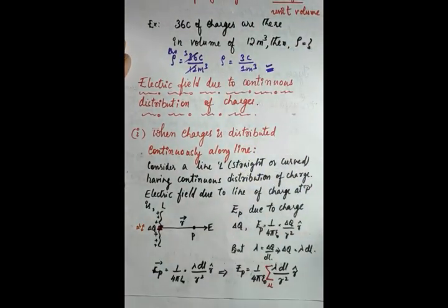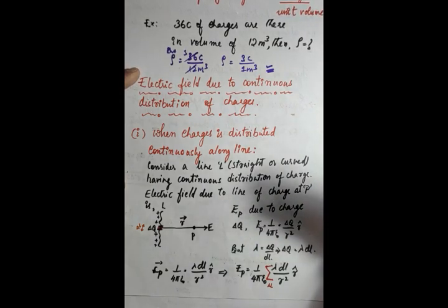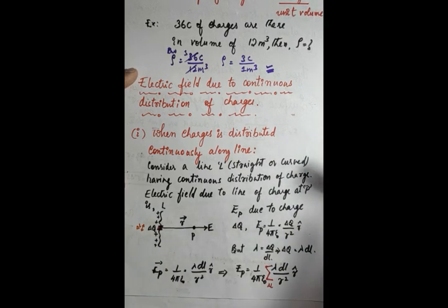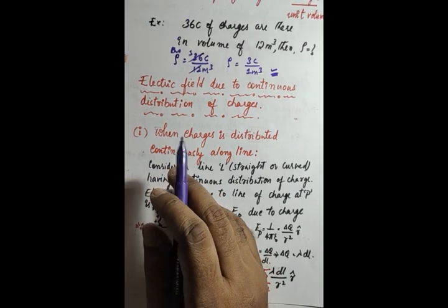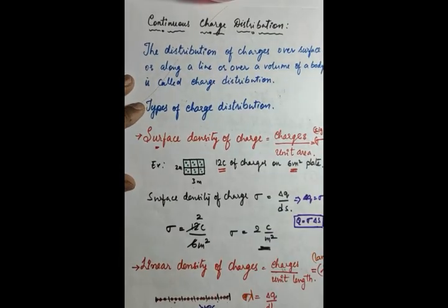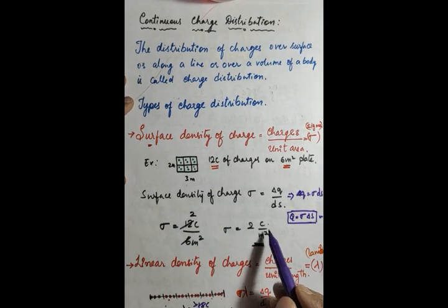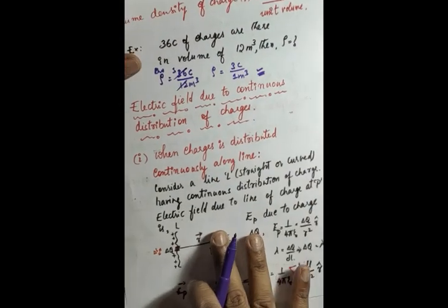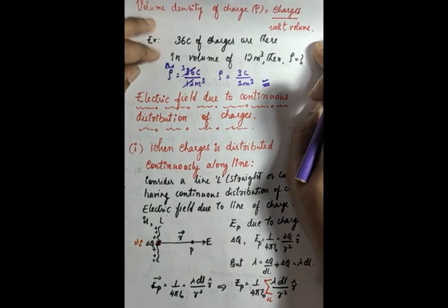To summarize: volume density of charges is charges per unit volume. Surface density of charges is charges per unit area. Linear density of charges is charges per unit length. The unit of linear density is coulomb per meter, the unit of surface density is coulomb per meter square, and the unit of volume density is coulomb per meter cube.